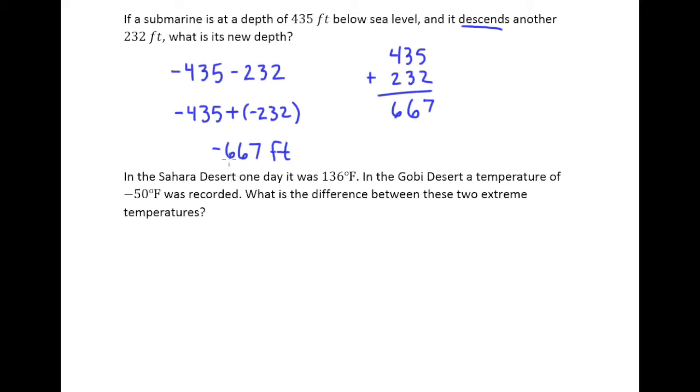In an example like this, I think it's nice to put the negative in context. Rather than giving our answer as negative 667 feet, I think it'd be nice to say: the answer is 667 feet below sea level. It would still be correct to have negative 667 feet, but make sure you say either one or the other.